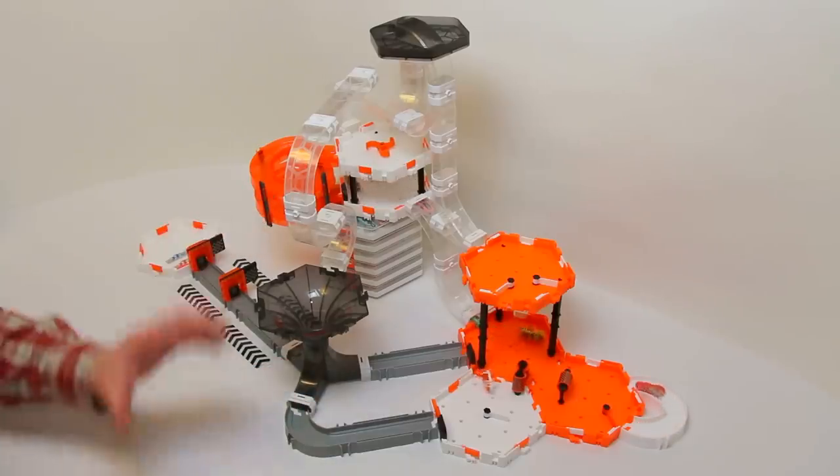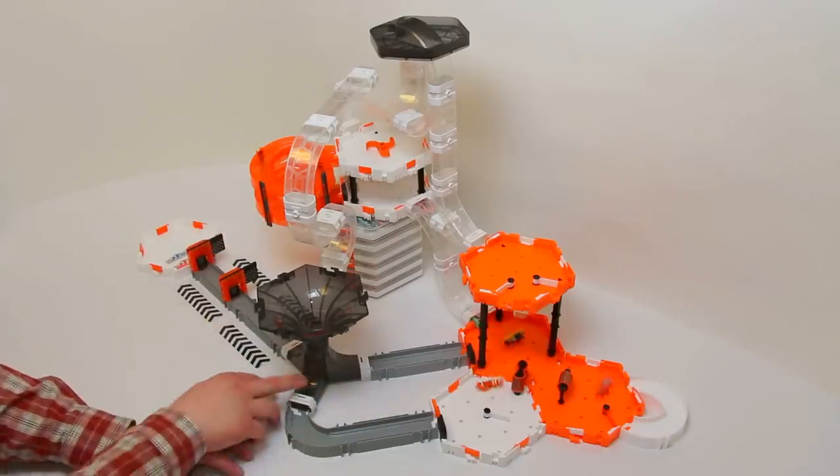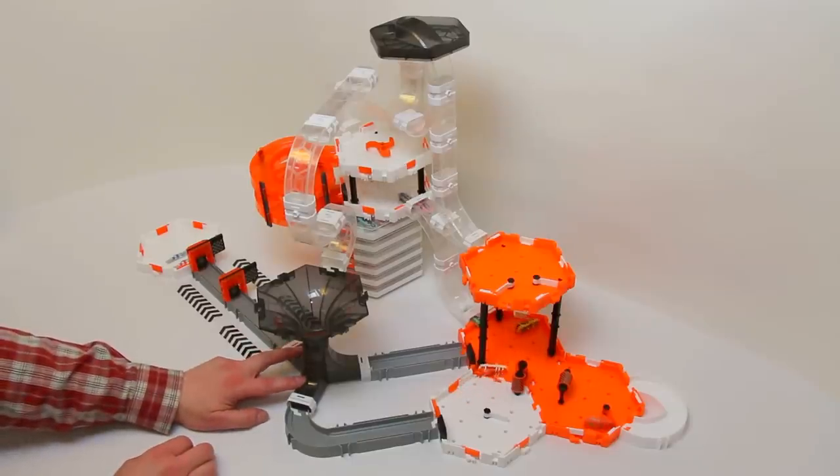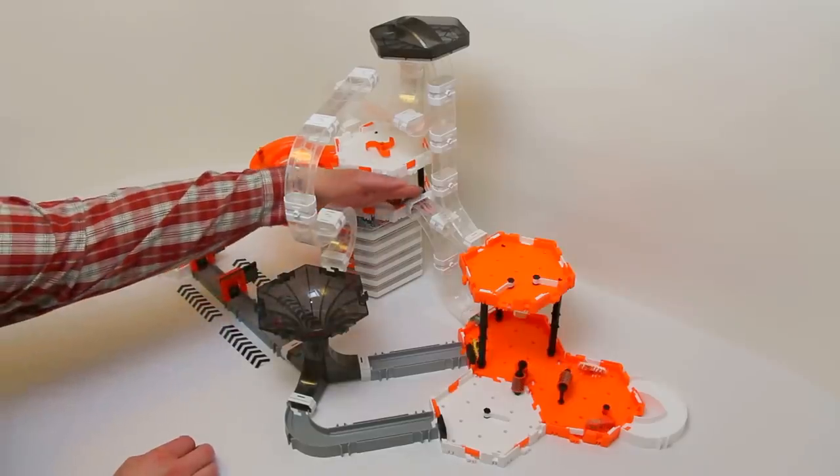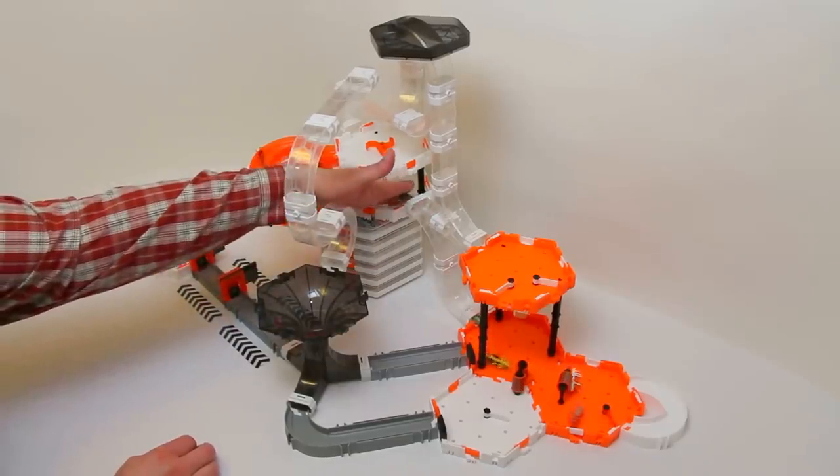So unceremoniously the bugs fall over. The black hole, sorry, is a bit of an evil drop for them. Inevitably they're going to be on their sides or possibly on their backs.